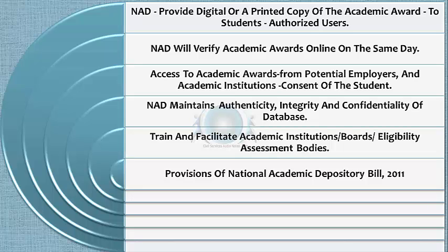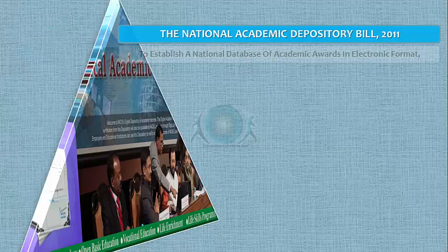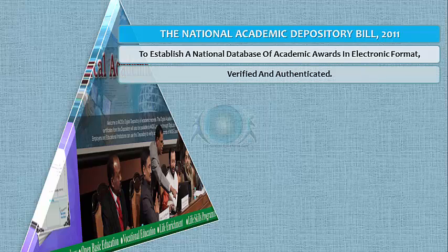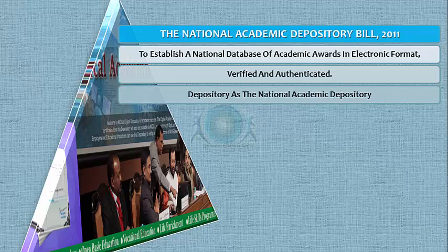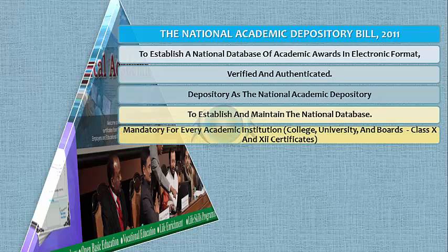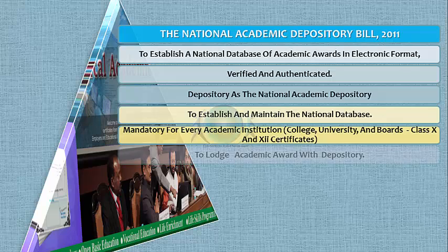The National Academic Depository Bill of 2011 seeks to establish a national database of academic awards in electronic format that can be verified and authenticated. The central government shall appoint a depository as the National Academic Depository to establish and maintain this database. The bill makes it mandatory for every academic institution — colleges, universities, and boards awarding Class 10 and Class 12 certificates — to lodge every academic award with the depository.